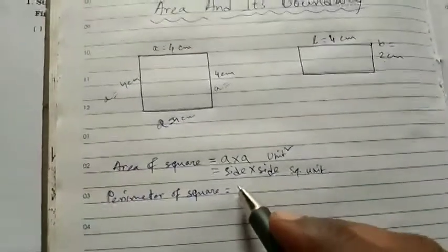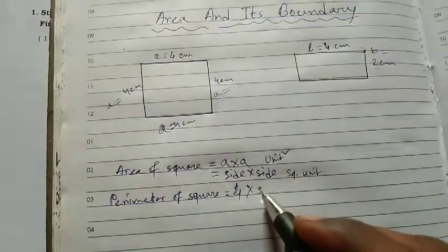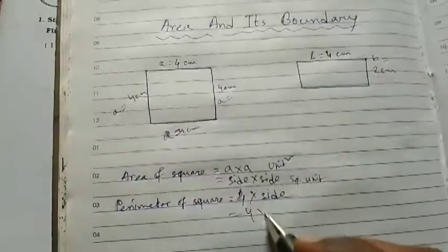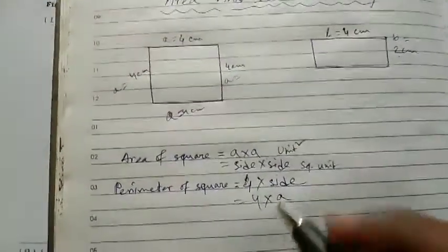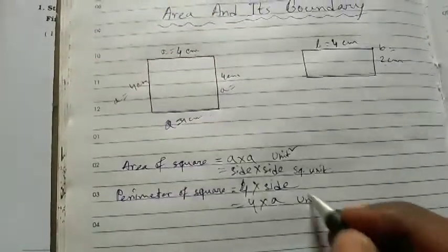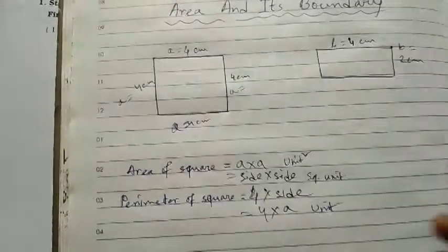Perimeter is 4 into side. It is equal to 4 into A. So this perimeter is 4 into 4, which equals 16. And unit will be just unit, not unit square.